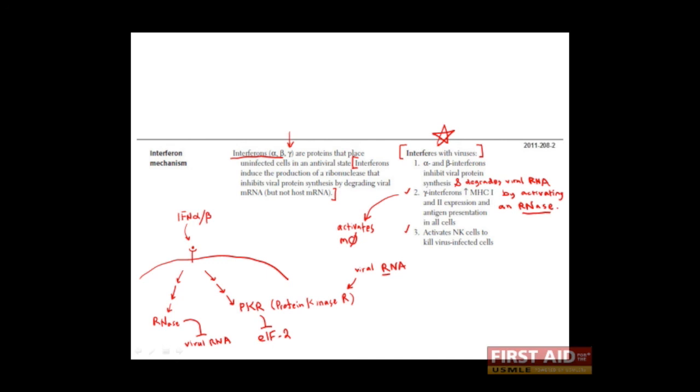Thus, in the presence of viral RNA, protein kinase R will stop ribosomal translation in a host cell, which viruses depend on for the production of their viral proteins.